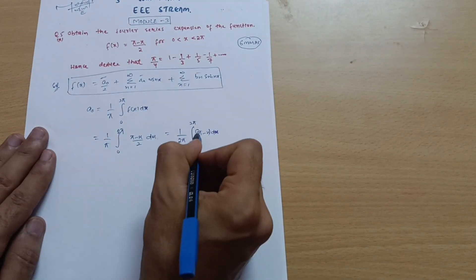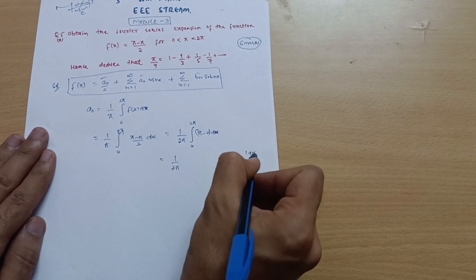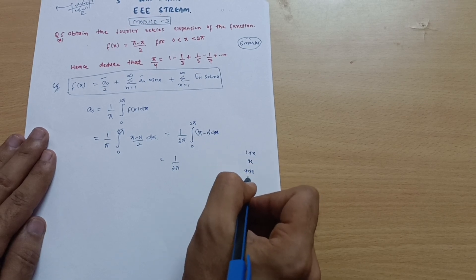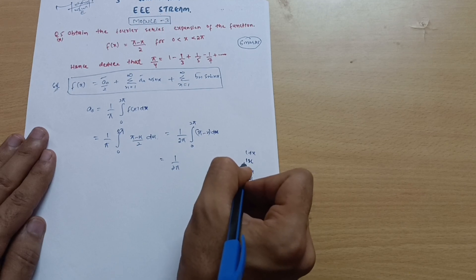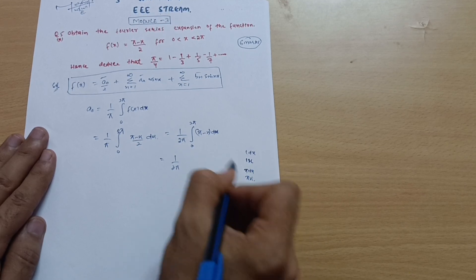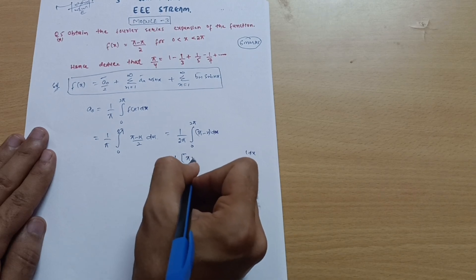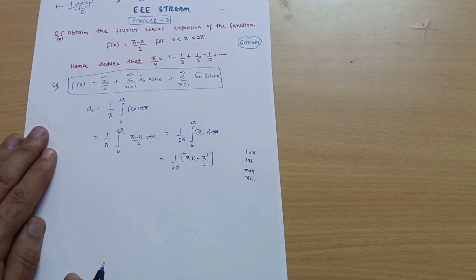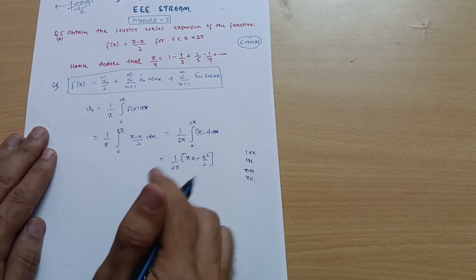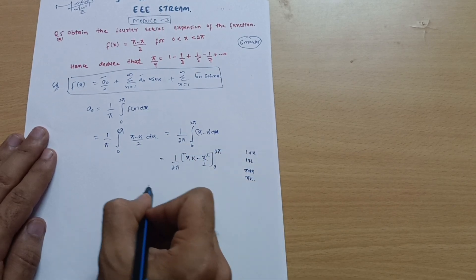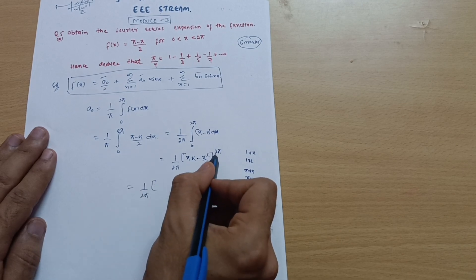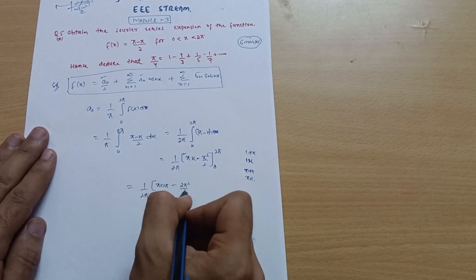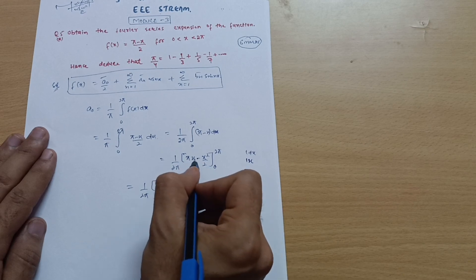Integrating: (1/2π) [πx − x²/2] from 0 to 2π. Applying the upper limit x = 2π: π(2π) − (2π)²/2 = 2π² − 4π²/2 = 2π² − 2π². The lower limit gives 0. So we get (1/2π)(2π² − 2π²).